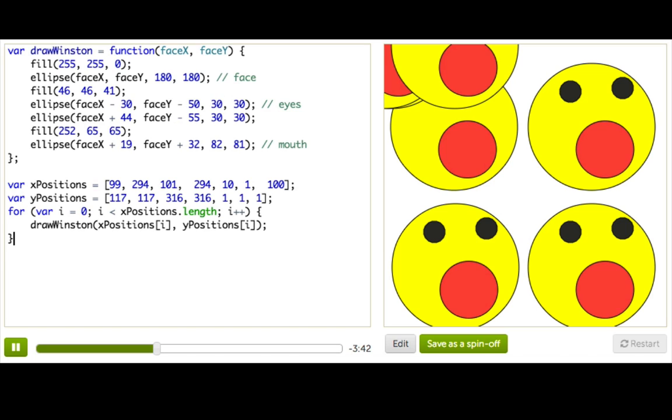One idea is that we could actually store them as objects. Because think about it, each position is really two bits of information, the x and the y. So we could have an object which has x and y properties. And then we could have an array of objects with all these x,y positions. So let's do that.